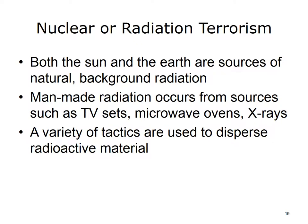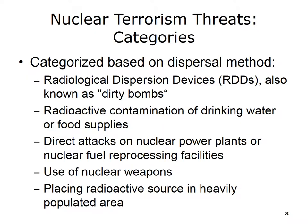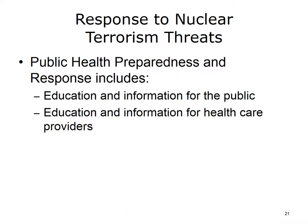Both the sun and the earth are sources of natural background radiation. Man-made radiation occurs from sources such as TV sets, microwave ovens, and x-rays. A variety of tactics are used to disperse radioactive material as acts of terrorism. Nuclear or radiation terrorism threats are divided by their means of dispersal, varying from dirty bombs to the simple tactic of placing a radioactive source in a heavily populated area. The public health response to nuclear threats consists primarily of educating and informing.